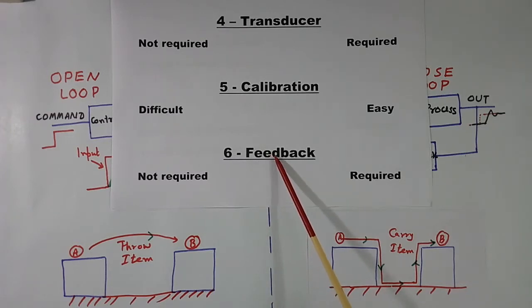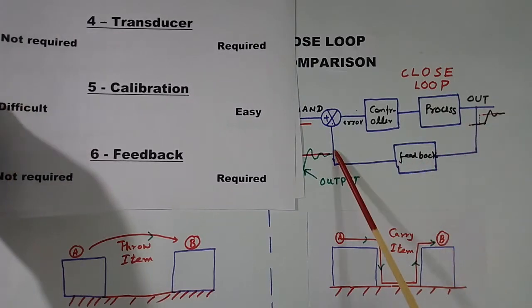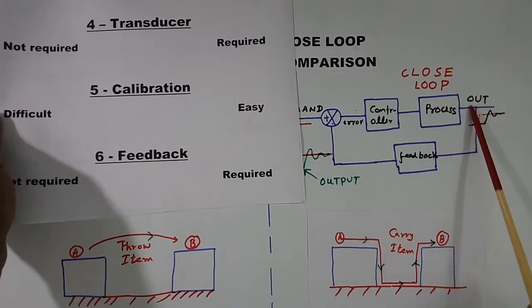Feedback. Feedback here not required, or we can say there will not be any feedback. In accurate language, no feedback will be here. Here feedback will be there. I have shown here. Feedback is there such that we get the accuracy.